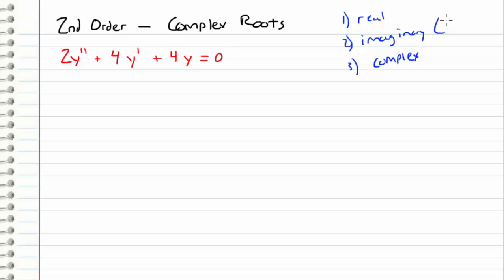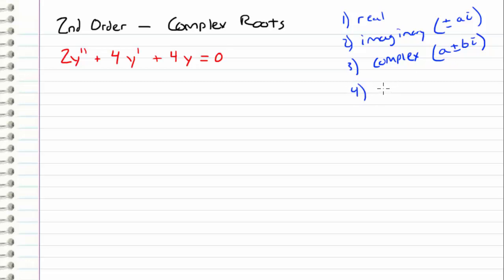Imaginary roots were of the form plus or minus a times i, but this time we're going to be looking at complex roots which are of the form a plus or minus b times i. So we have a real component now in addition to an imaginary component. And then in the final case, which will be in the video after this, we're going to look at the repeated roots case.